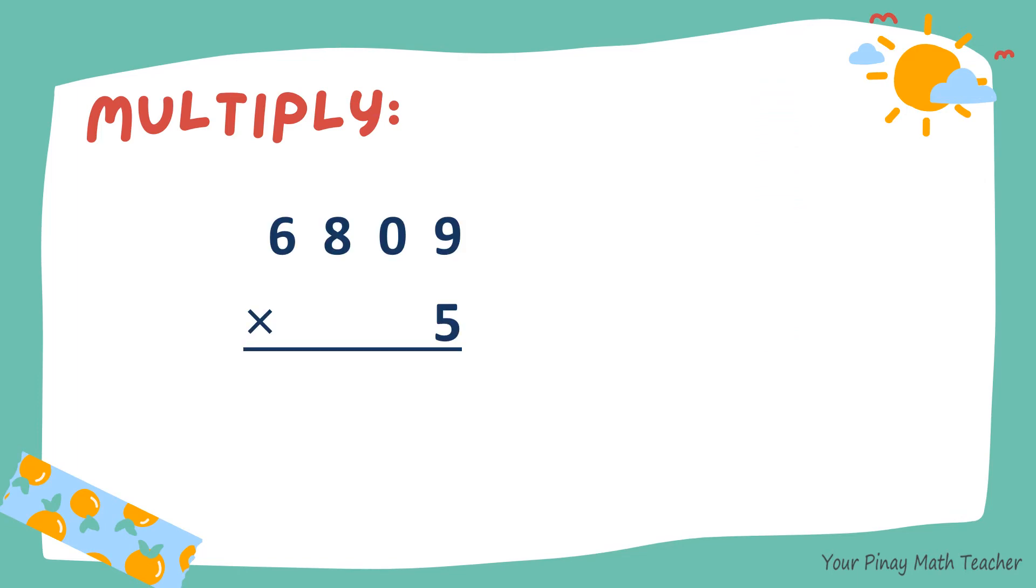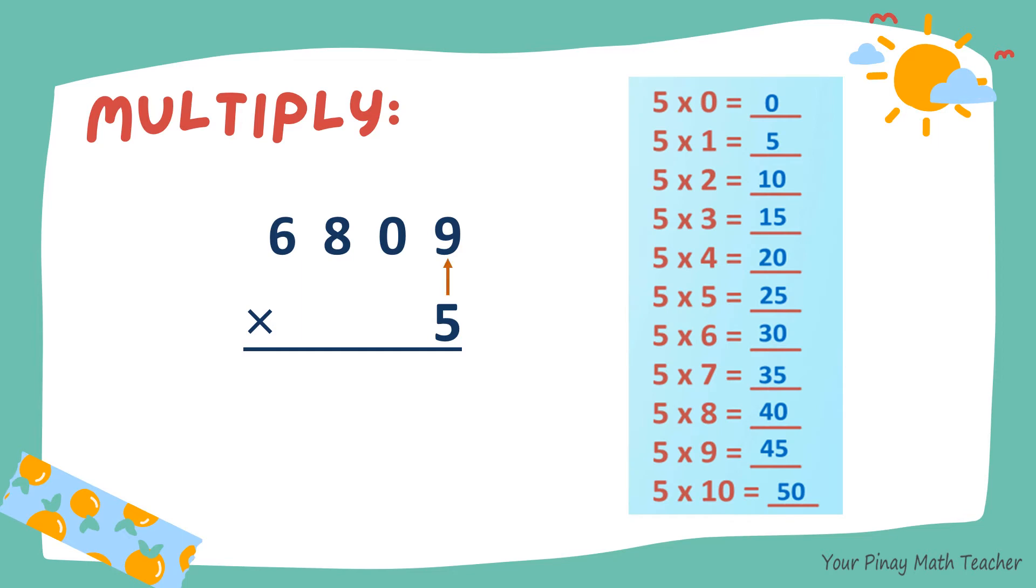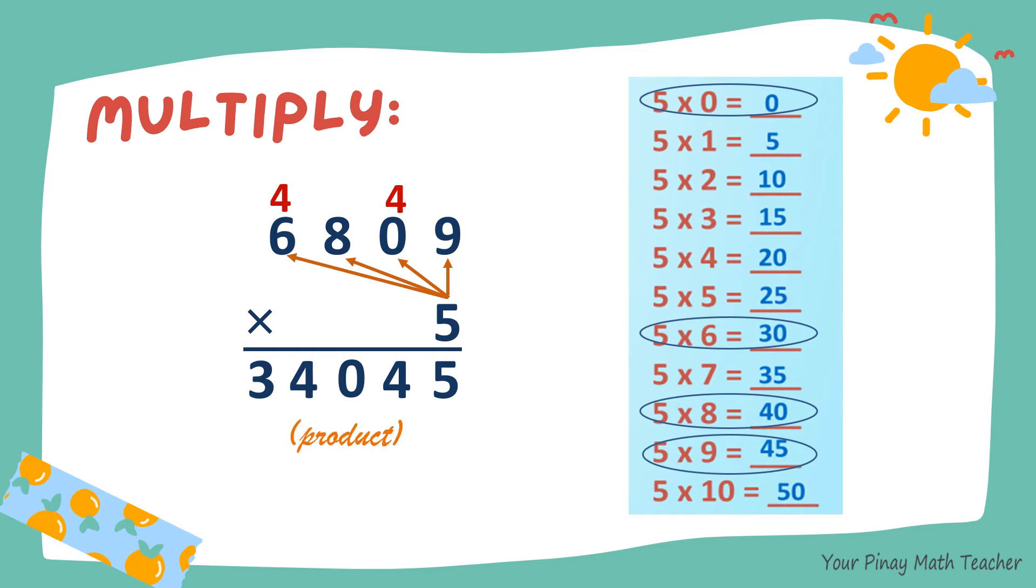Next example, 6,809 times 5. 5 times 9 is 45. So 5 carry 4. 5 times 0 is 0. Plus 4, 4. 5 times 8, 40. 0 carry 4. 5 times 6 is 30. So the product is 34,045.